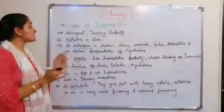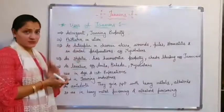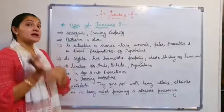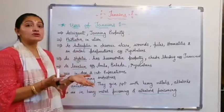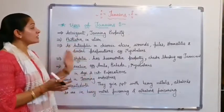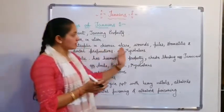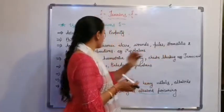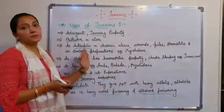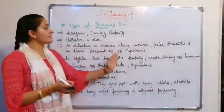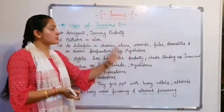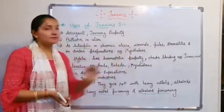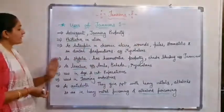The third use is as an antiseptic. Because of their antiseptic effect, tannins are used in chronic ulcer, wound healing, piles, stomatitis, and dental preparations. For example, myrobalan is a drug used as an antiseptic in these conditions.